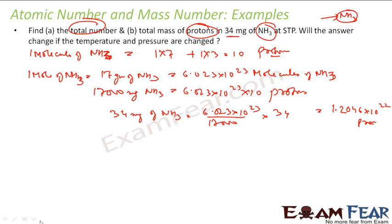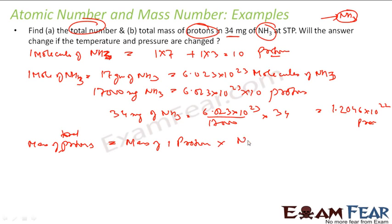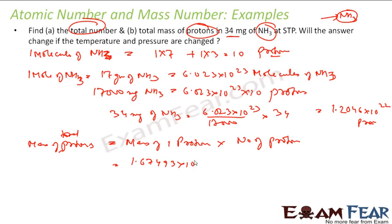Finding the mass of protons is straightforward. Total mass of protons = mass of one proton × number of protons. Mass of one proton = 1.67493×10⁻²⁷ kg, and number of protons = 1.2046×10²². Multiplying gives 2.0176×10⁻⁵ kg.